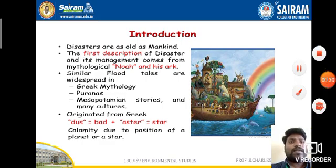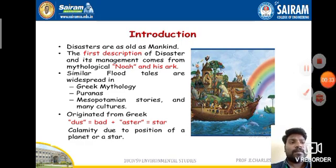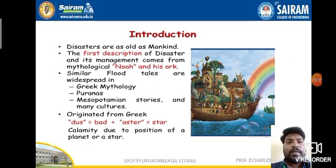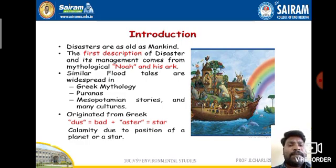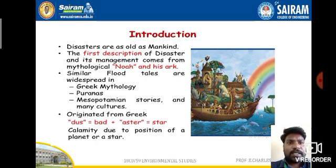First and foremost, we will see the meaning of the word 'disaster.' The meaning of disaster comes from 'dis,' which means bad, and 'aster,' which means star. It is originated from the Greek language, indicating 'bad star,' which refers to calamity due to the position of a planet or a star.